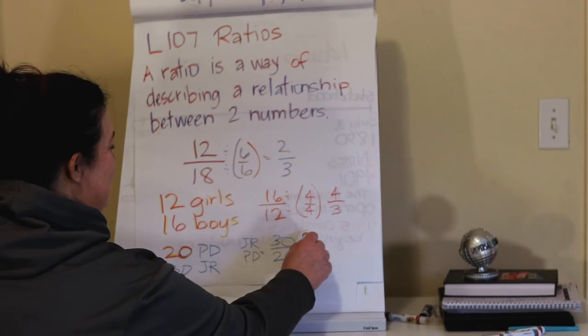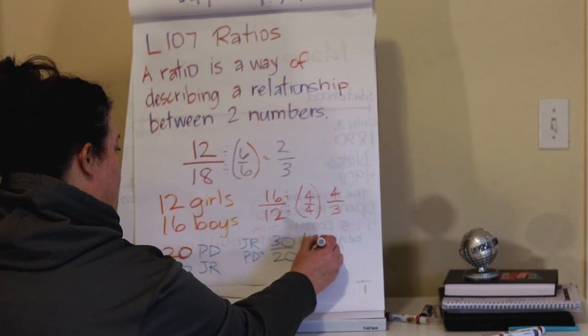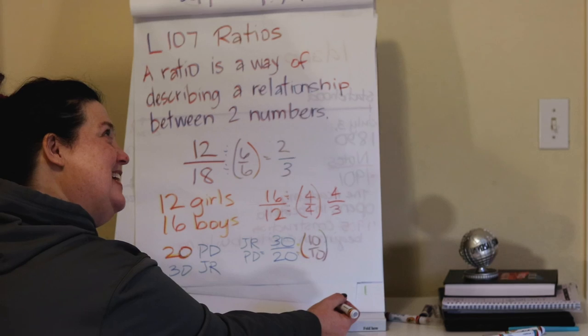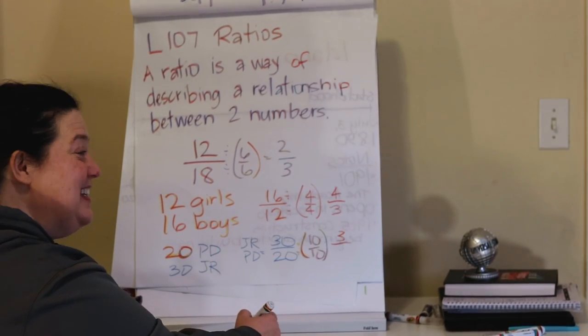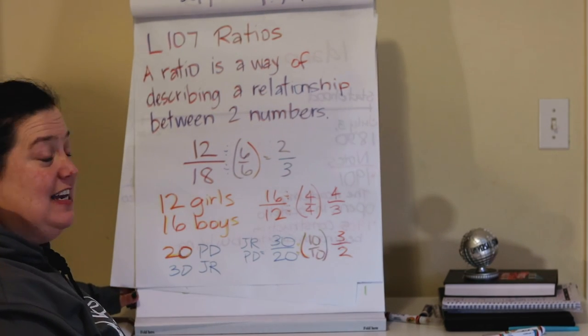Correct. 10 can. So 30 divided by 10 is 3. And 20 divided by 10 is 2. So our ratio of jackrabbits to prairie dogs is 3 to 2.